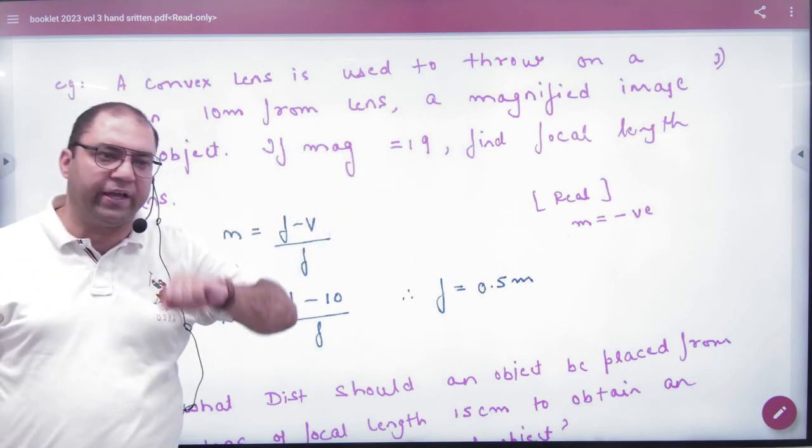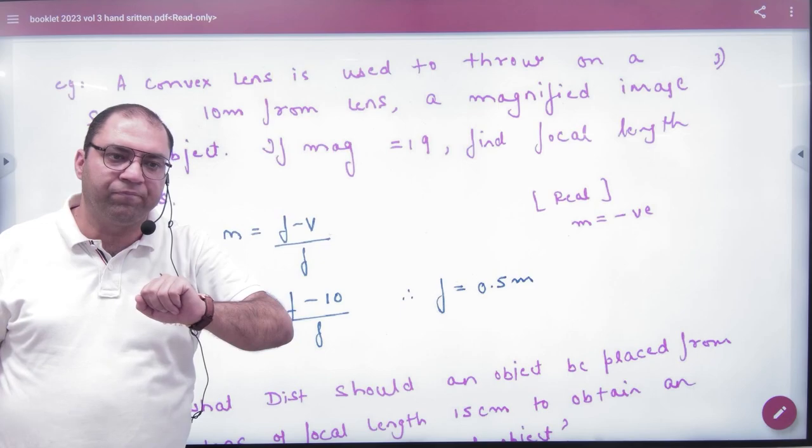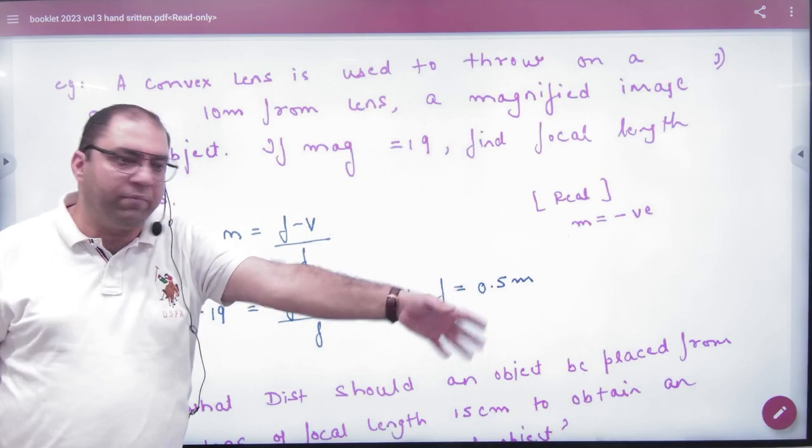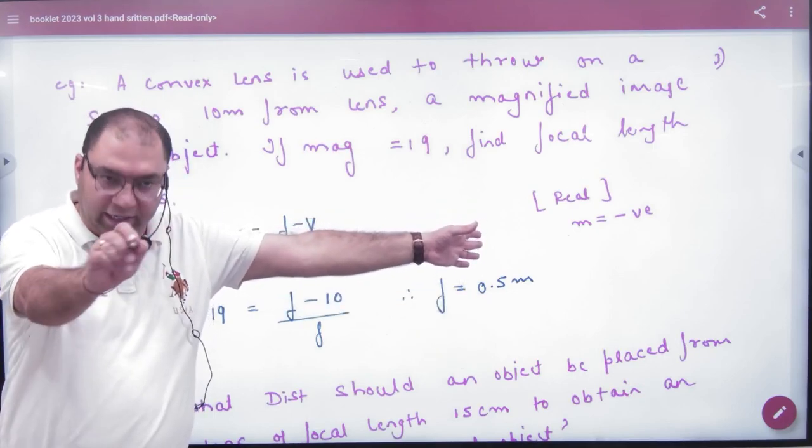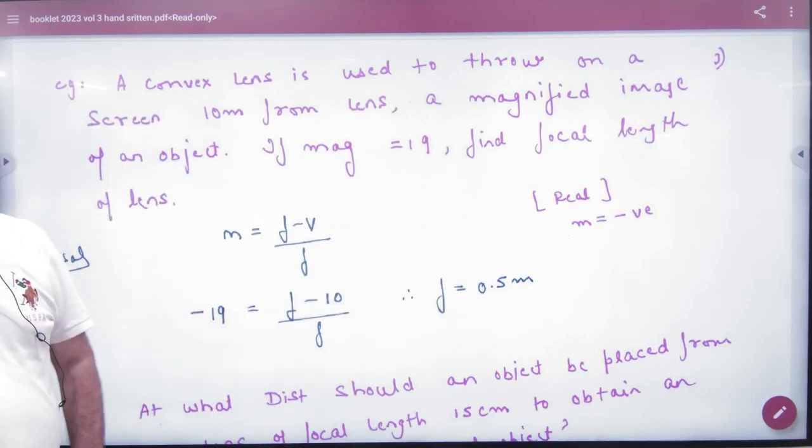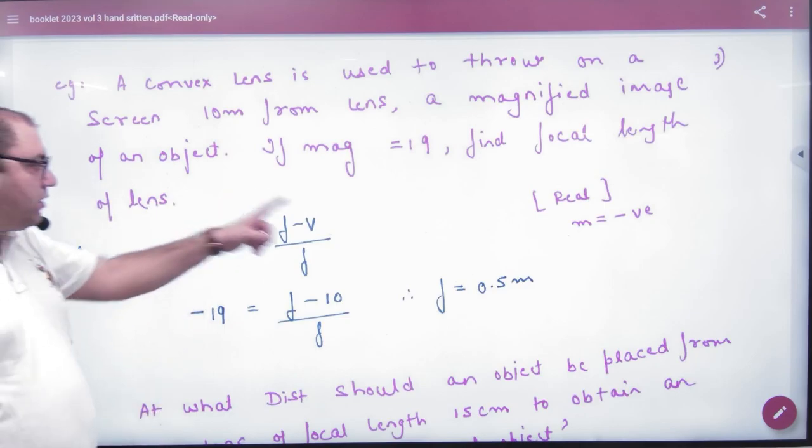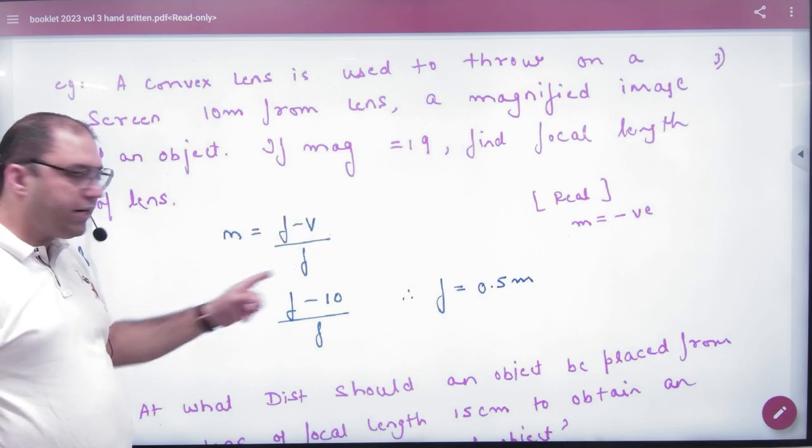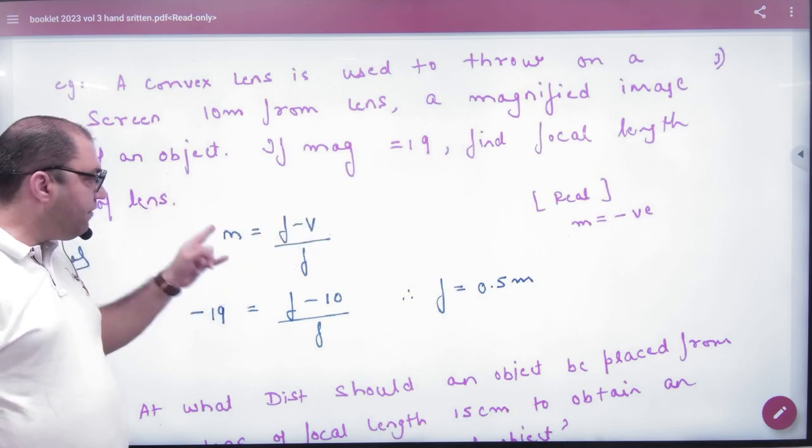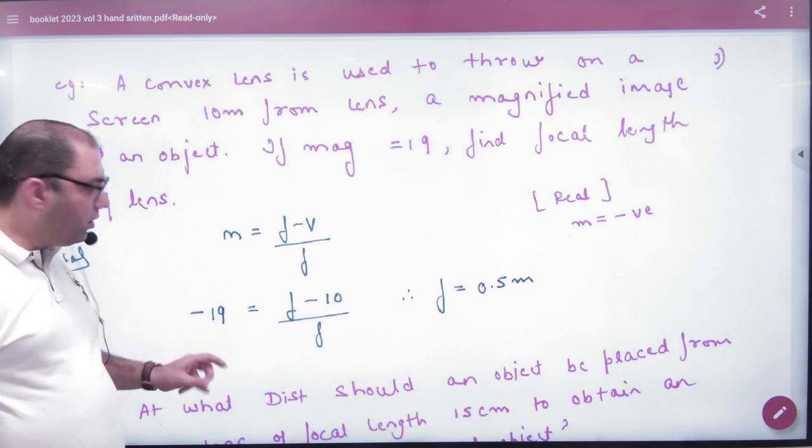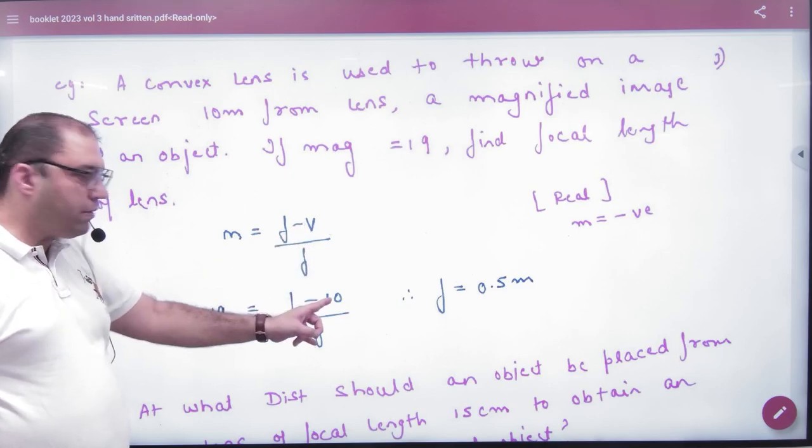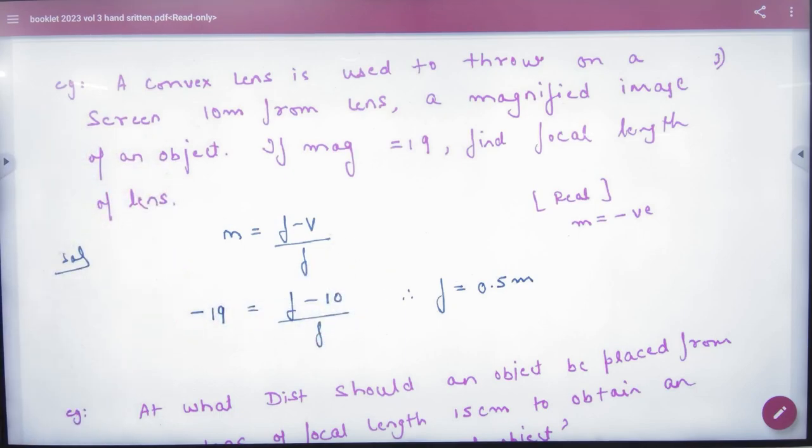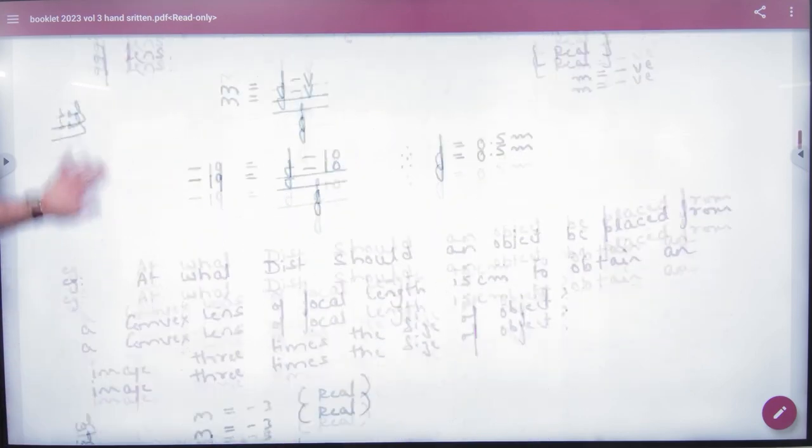Now tell me one thing: if an image is made on the other side, it cannot be virtual. What will it be? Real. Real is inverted, so what will be the magnification? Negative. Magnification is negative, meaning real and inverted. When you have to find focal length and you know V and M, what will you identify? Magnification with sign is minus 19. Focal length you have to find, and V is plus 10.